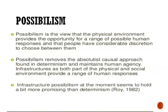In environmental determinism, it is said that whatever the environment gives us, we must follow it. But possibilism says that humans have their own powers and can do much on their own — it promotes human agency. Possibilism also tells us that infrastructure, as part of both the physical and social environment, provides a range of human responses. For example, if there is a river to cross to access resources, you will make a bridge — and that bridge is considered possibilism.